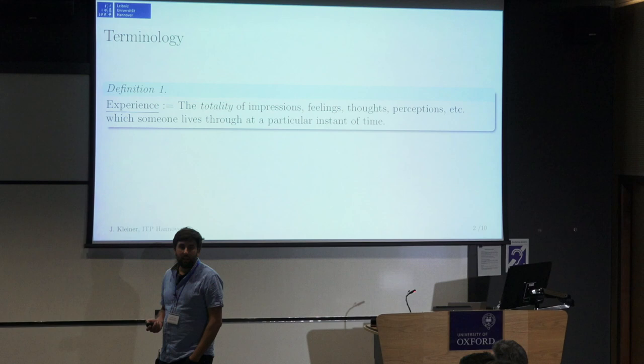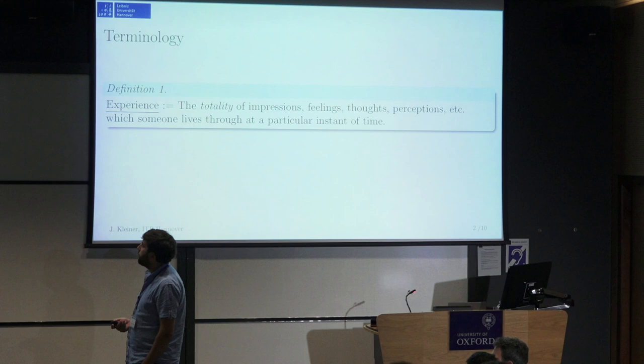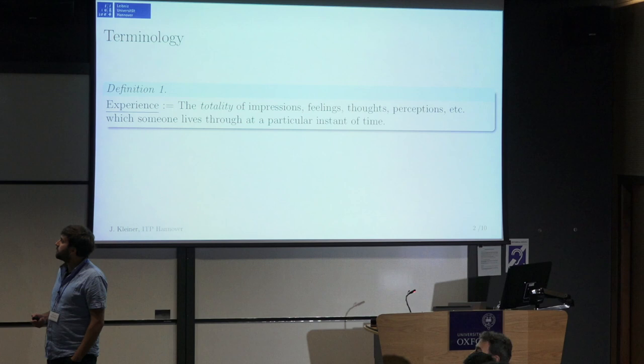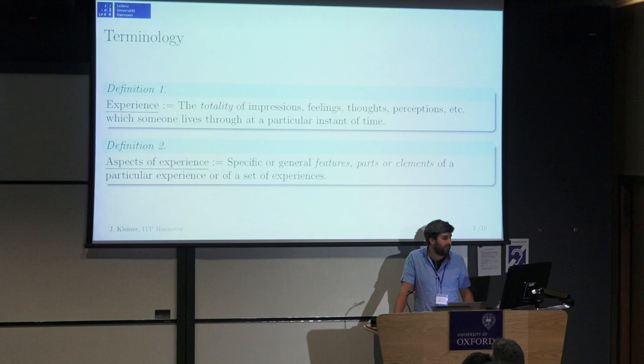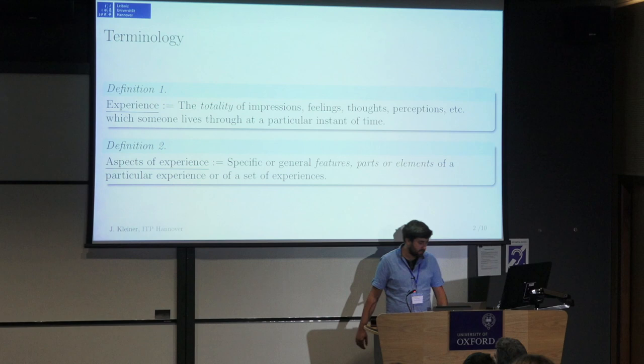Just to fix some terminology in advance: I'm going to be speaking about experience and not consciousness, which are defined for this talk as the totality of impressions, feelings, thoughts, perceptions, et cetera, which someone lives through at a particular instance of time. For example, right now you have an experience. Furthermore, I'm going to be talking about aspects of experience — that is, specific or general features, parts, or elements of a particular experience. So for example, color and color experience would be an aspect of experience.